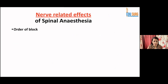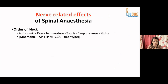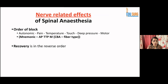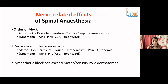The order of block is: autonomic, pain, temperature, touch, deep pressure, then motor — mnemonic AP-TTPM — from C fiber type to A fiber type. Recovery is in reverse order: motor, deep pressure, touch, temperature, pain, and autonomic — fiber order ABC — with myelinated fibers recovering first and unmyelinated last, as they take longer due to being smaller nerve fibers. The sympathetic block can exceed motor and sensory levels by two dermatomes.